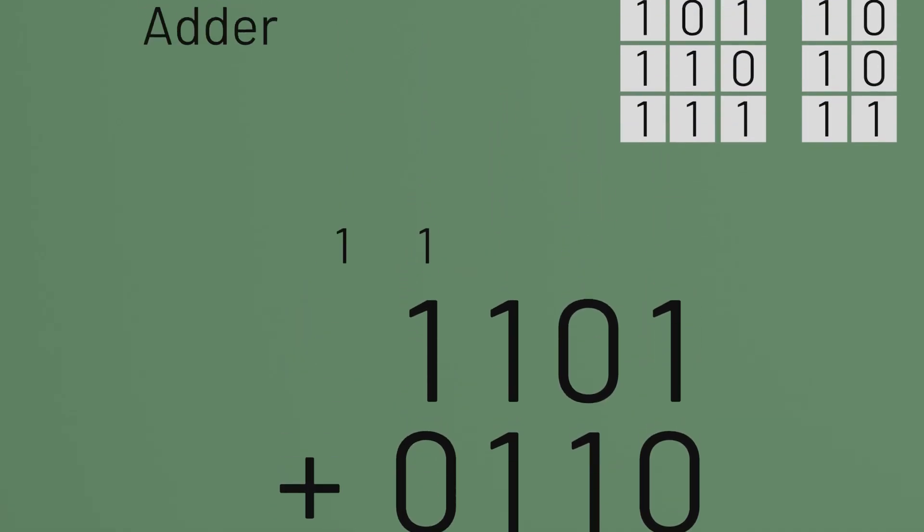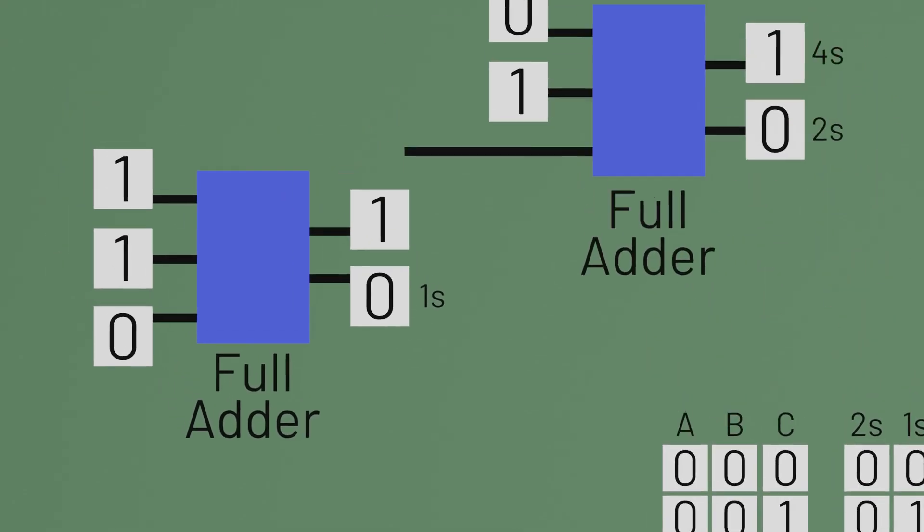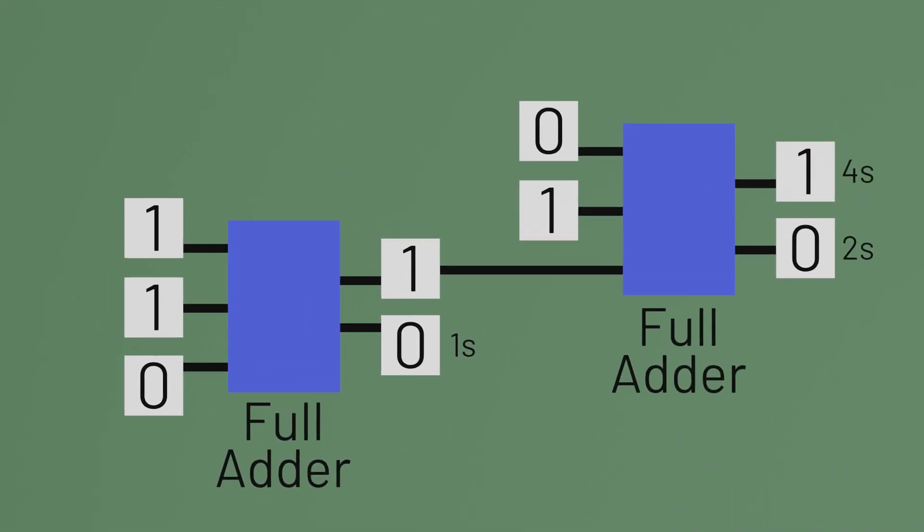So once we have a full adder that can add three bits together, two operand bits plus one carry bit, we just need to repeat that component over and over to be able to add numbers that are as big as we'd like.